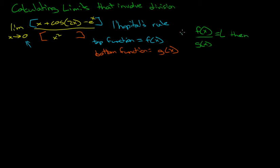Then f prime of x over g prime of x will also equal L. We can also say one more thing: f prime prime of x over g prime prime of x also equals L, and so forth, as long as the limits exist on both sides.